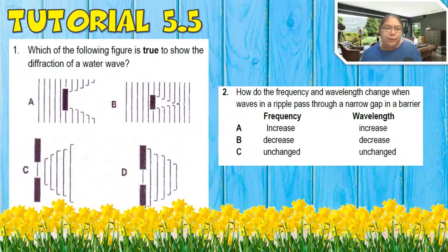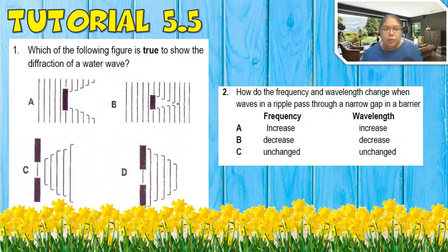Objective question. Question one: which one is true about the diffraction of water? The obstacle must be closer. After the wave is diffracted, they will join back - see this one far away, so this one is out. This one normally should be circular, and this one also no. The answer should be B.